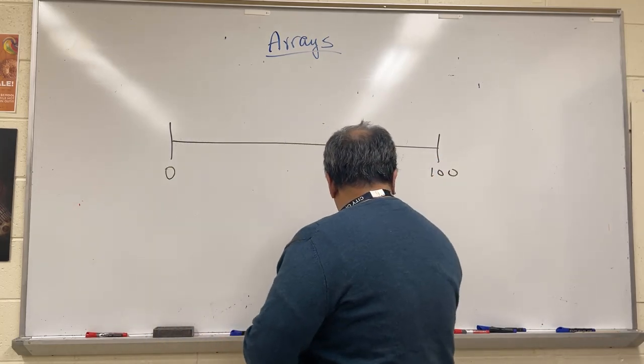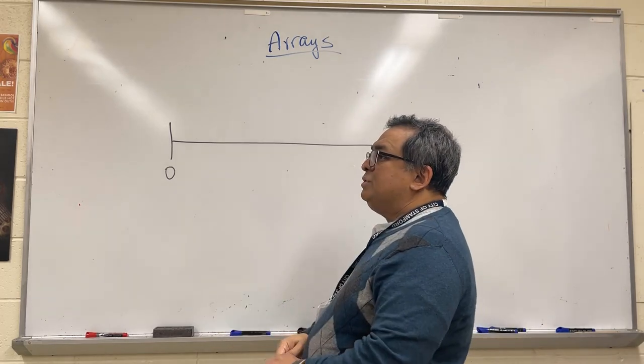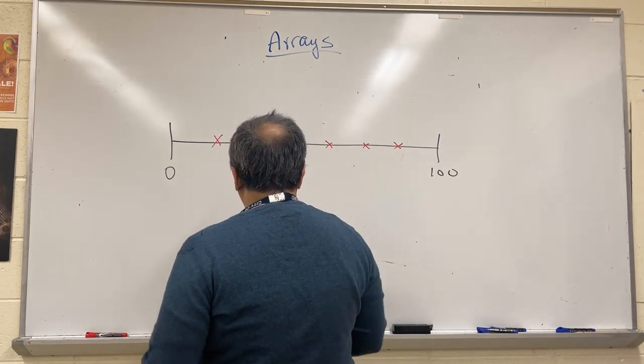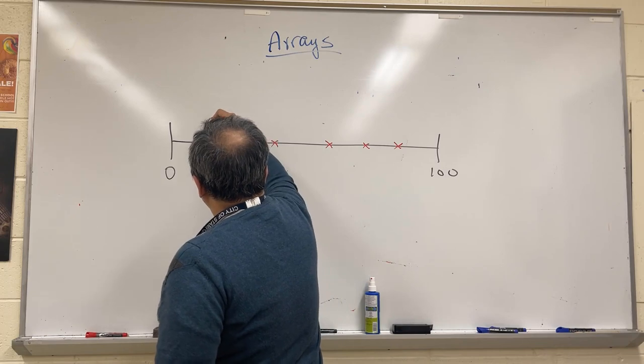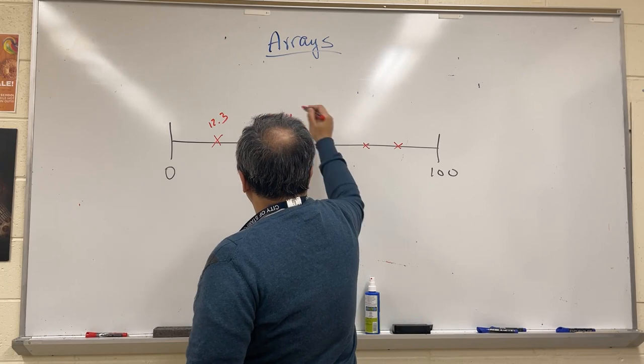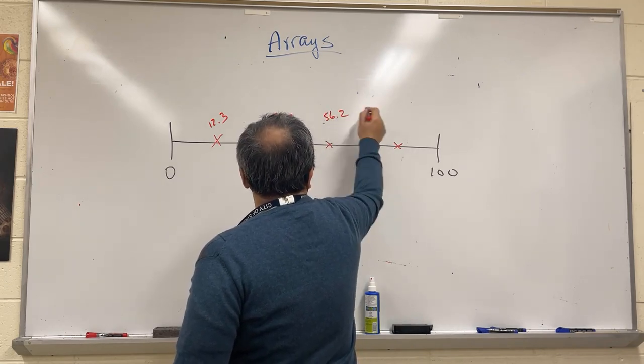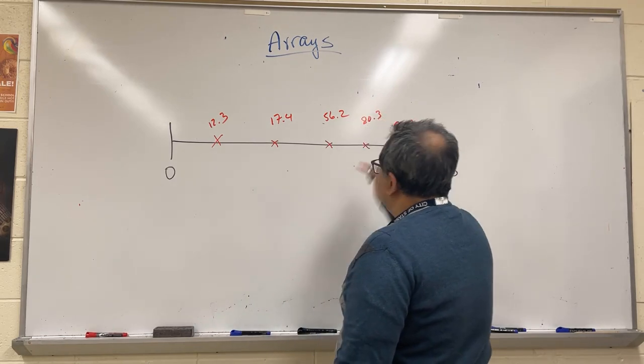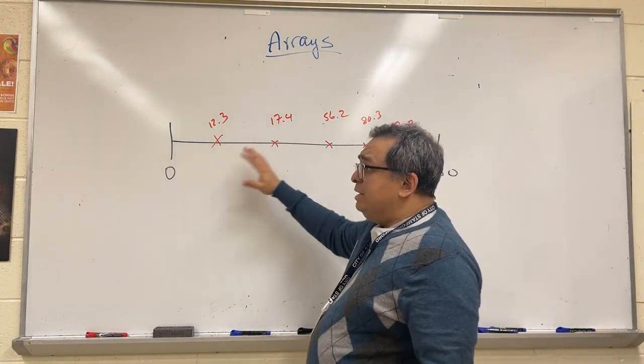Let's say that I had a number line over here. Maybe we ran some sort of science experiment and we gathered a bunch of points. I'll just make up some values here: maybe this is the number 12.3, maybe this is like 17.4, maybe this is 56.2, maybe this is 80.3, and this maybe is like 90.7. I just made those up.